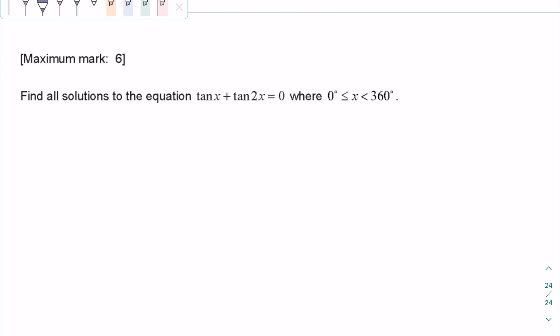Find all the solutions to the equation tan x plus tan 2x equals 0, where x is between 0 and 360 degrees.